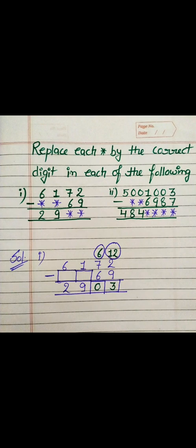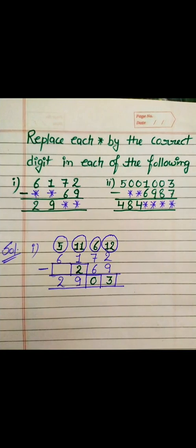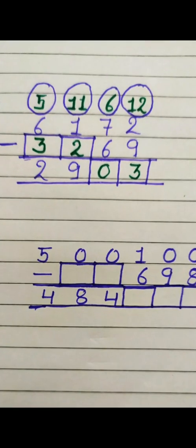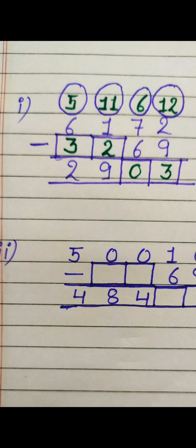Now for the next digit, by subtracting any number from 1 we can't get 9, so this 1 has taken borrow and become 11. Subtracting 2 from 11 gives 9, and this 6 has become 5. Since 5 minus 3 equals 2, by this method we can get all the missing digits.